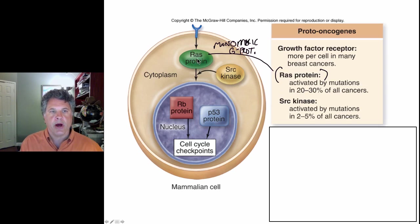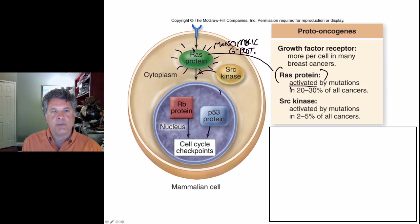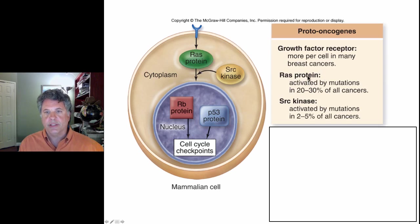The Ras protein signals growth to the cell by turning on genes required for cell growth. If the Ras protein is mutated such that it is constitutively active — meaning it's always active even when there's no signal — the signal transduction pathway leading to growth is always on even when there's no growth factor around. This is another example of a proto-oncogene that can be mutated to cause cancer.